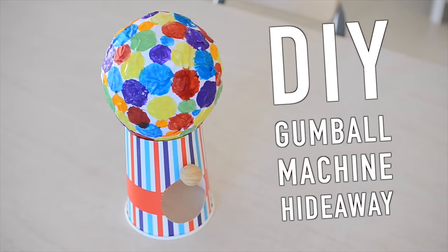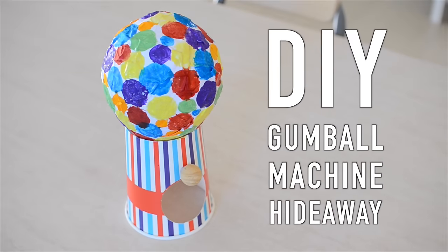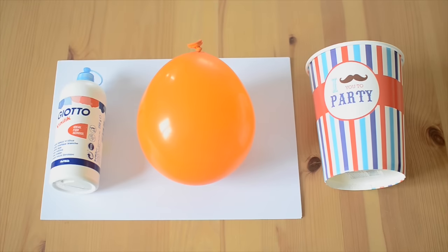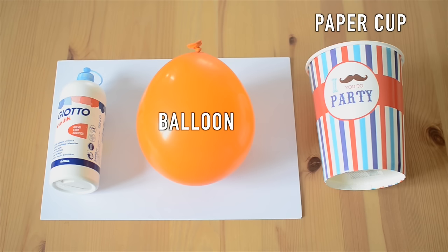Hi guys, as promised today I'm showing you how I made the gumball machine hideaway from my sweet-themed hamster cage. To make this you'll need a large paper cup, and I chose to use a popcorn cup, a half-inflated balloon, some non-toxic white glue and plain white paper. You'll also need some pet-safe paints such as vegetable food coloring or soy paint.